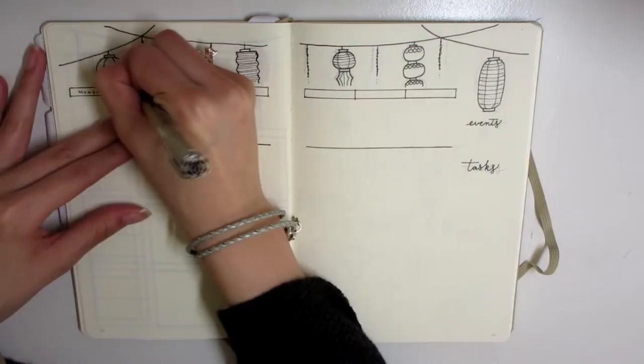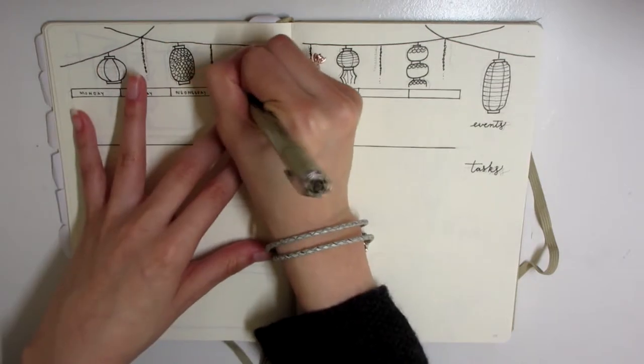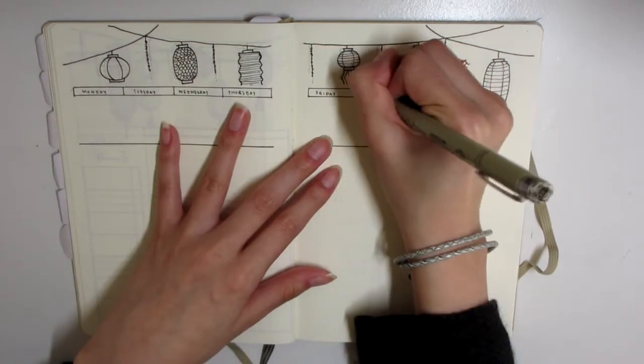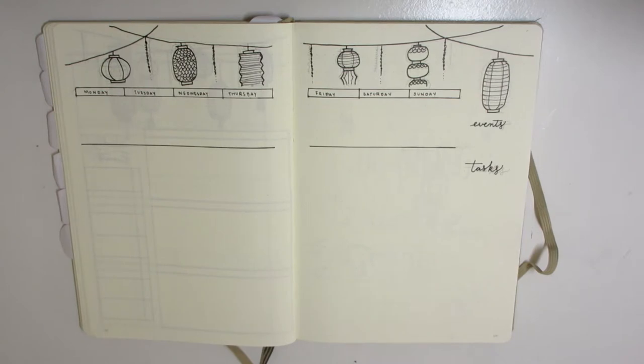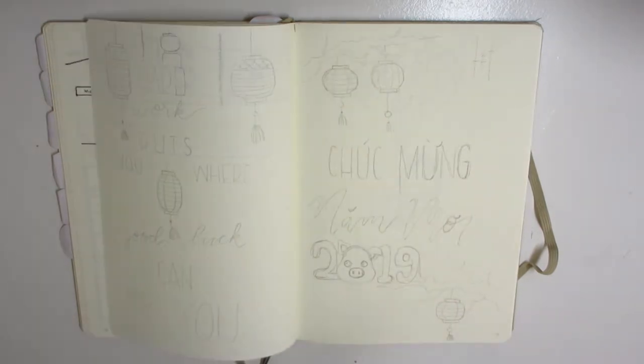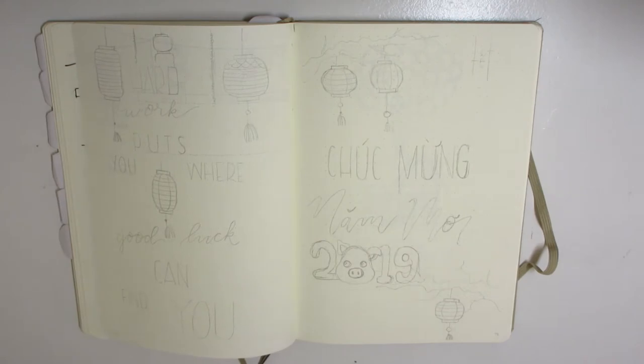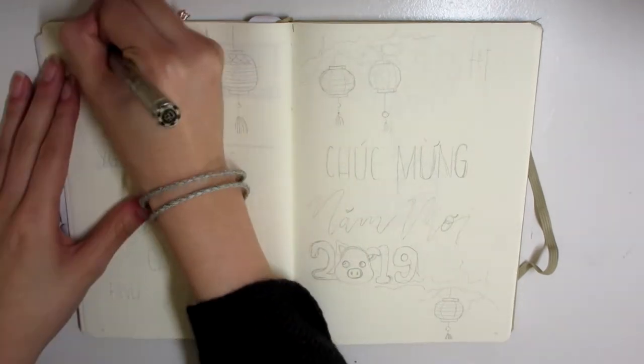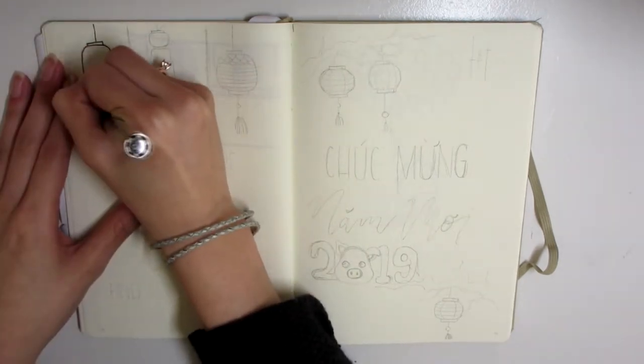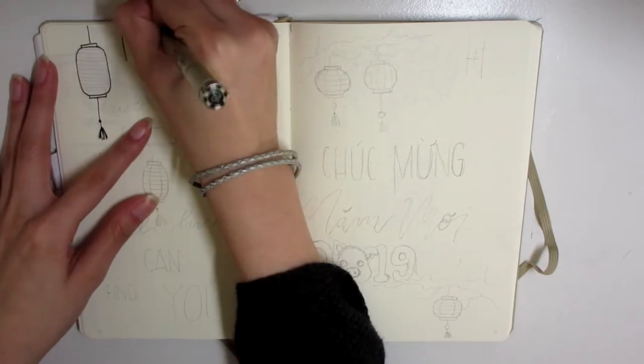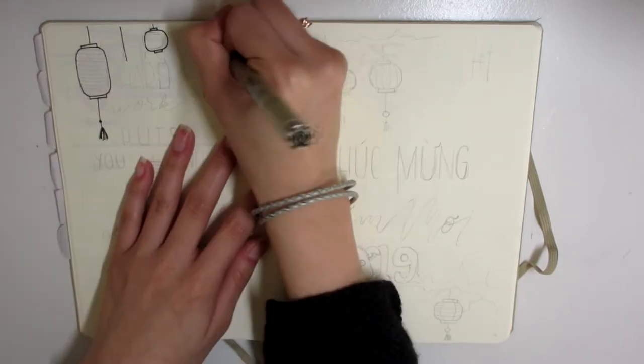I'm not drawing all the lanterns the same as hers, I'm not placing everything the same as hers. I'm kind of trying to do my own thing within her theme. Here I have the quotes page and the doodle for that, which is basically the Vietnamese version of Lunar New Year.